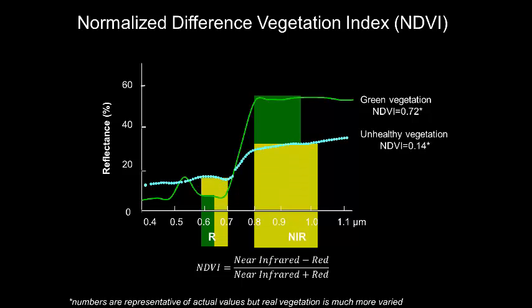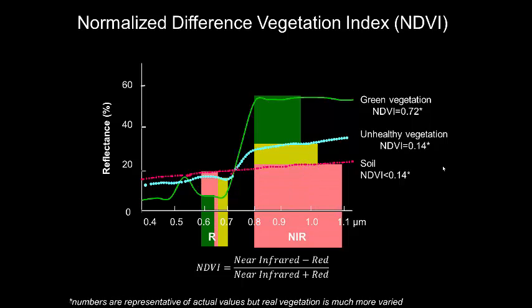Unhealthy vegetation or sparse vegetation reflects more of the visible light and less in the near-infrared light, and therefore presents lower values of NDVI. Finally, bare soil presents very low values of NDVI, making it easy, for example, to apply thresholds to filter out the soil for vegetation applications.